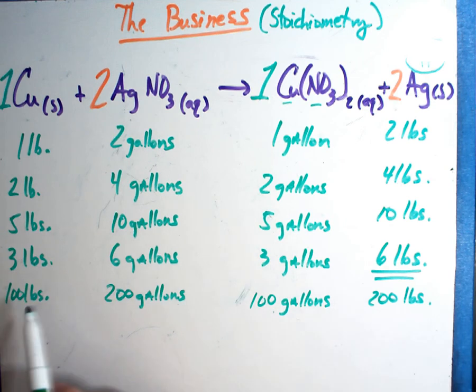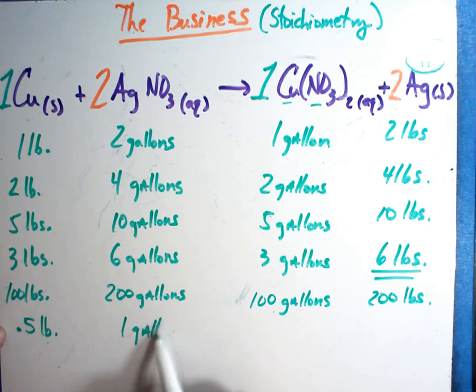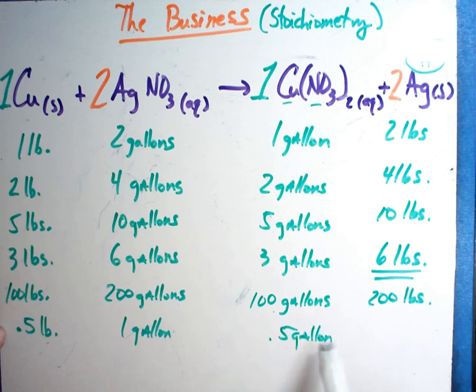We go back to the metal store and this time they only have a half a pound. Can we still do this? Well, sure. Just like you can have a gallon of milk or a half a gallon of milk, you can have half the recipe. Well, that's half so that means I need to go buy one gallon of this. When I mix them together, I don't get a lot but I get a half gallon of this and I get a pound of this. Doesn't matter what ratio, it always works.